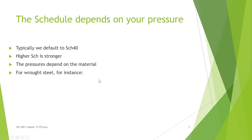Typically we default to schedule 40, which is the standard. You can go to lower schedules like schedule 10 or schedule 5, which tend to be used for things like drain pipes where there is no pressure issue. If you go to a higher schedule — schedule 80 or 120 — then the pipe is going to be stronger, and the pressure it can withstand will depend on the material you choose and the schedule, which reflects the wall thickness.